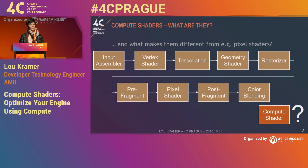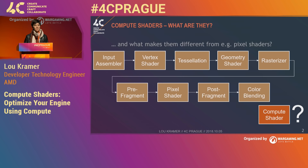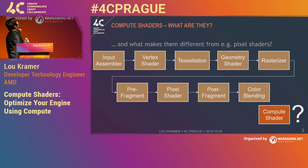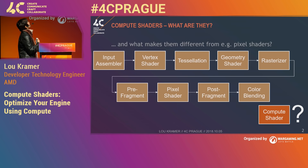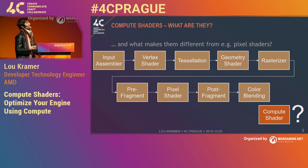What are compute shaders, and what makes them different from other shaders? If you have done some graphics programming before, you probably know the graphics pipeline. Usually you have some models made of vertices. They get into the GPU and get processed. The vertices get processed using the vertex shader. Then you can have tessellation or geometry shader if you want. Then the rasterizer does its work so that you get actual pixels. Then you have the pixel shader, and at the end you have the render target — your output.